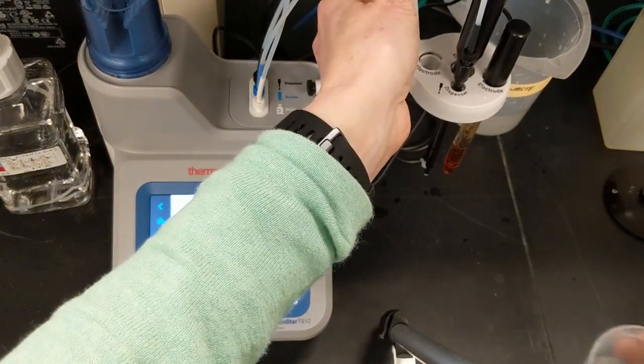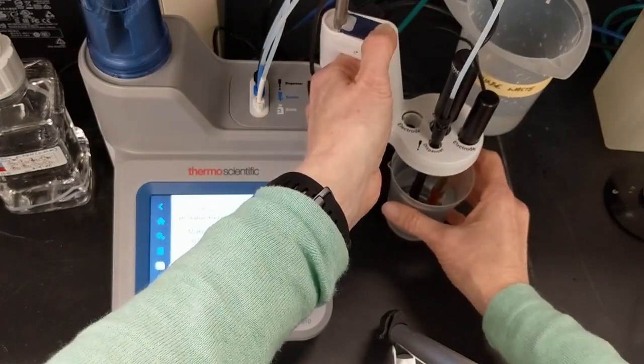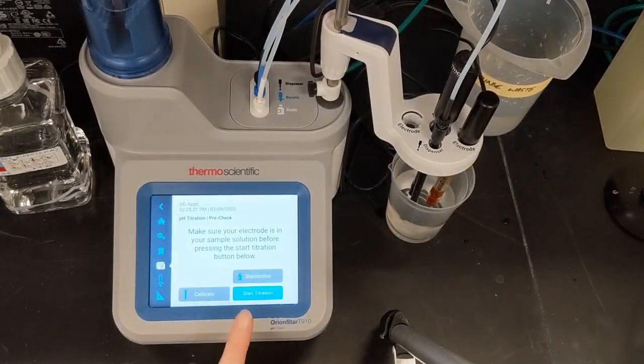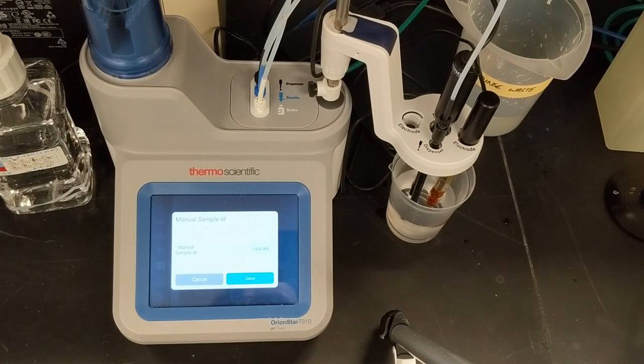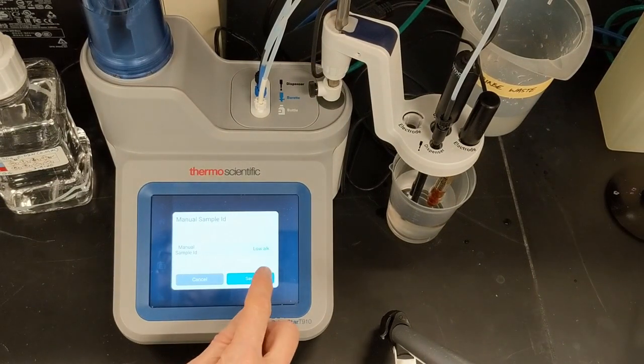I've already rinsed the electrode, stirrer, dispenser, and ATC, so I lower the holder into the solution and select Start Titration from the titration pre-check screen.